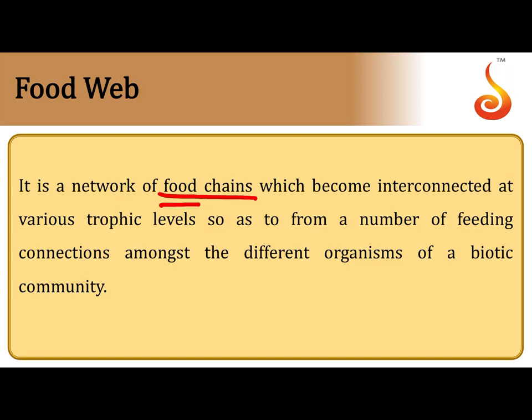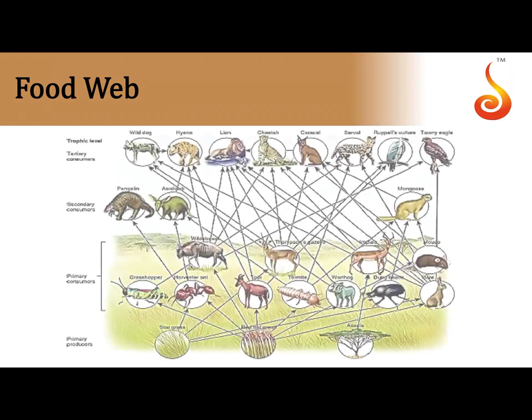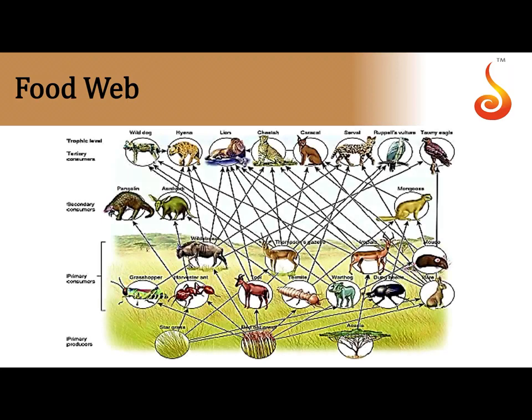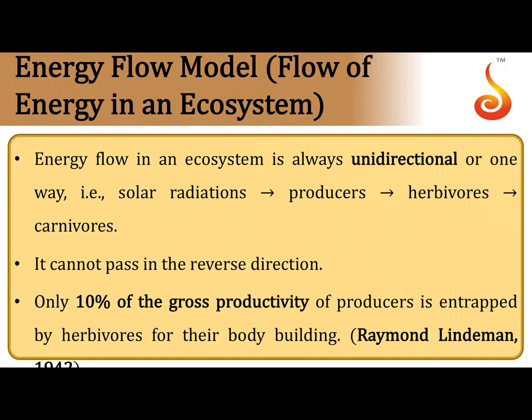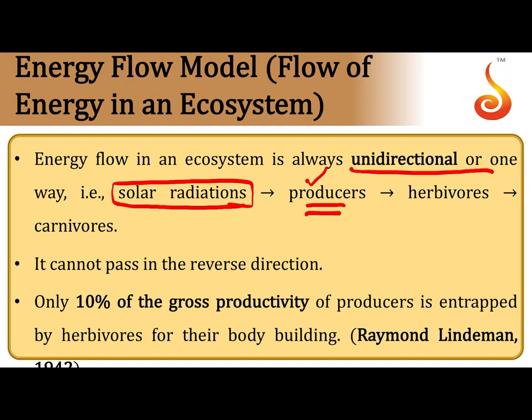When many food chains are interconnected based on their feeding connections, they form a food web. In an ecosystem, energy always flows in a unidirectional manner from sunlight through producers onwards. The passage of energy follows the 10% law proposed by Raymond Lindemann in 1942, which states that every trophic level receives only 10% of the energy captured by the previous trophic level.